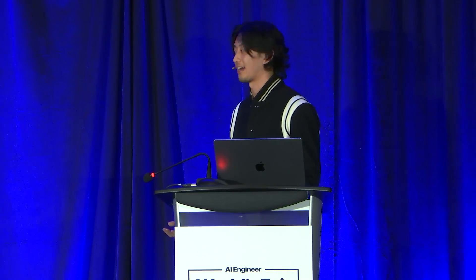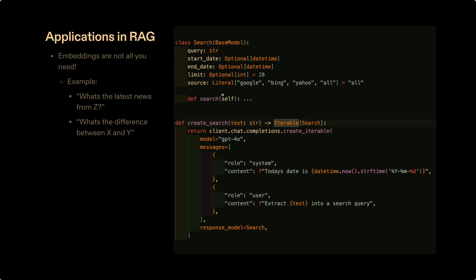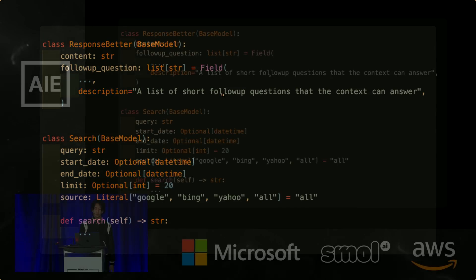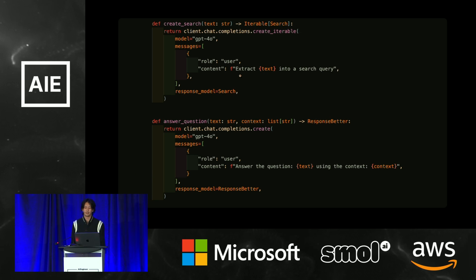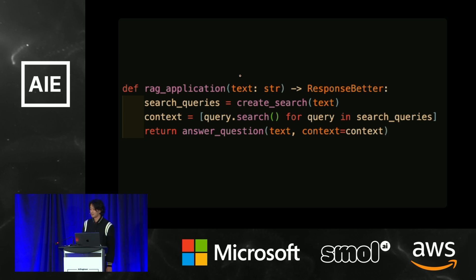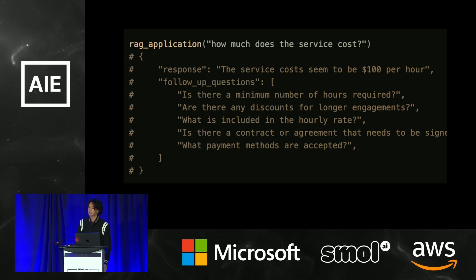If you ask 'what is the difference between X and Y,' you can just turn on iterable mode. Now you'll get a search query for Y and a search query for X, and your RAG application can do two parallel search queries, collect them together, and continue on. You can build a fairly sophisticated RAG application in two functions and two models: a model for how you respond with data and one for how you process a search query. You make a search query, return multiple searches, search each one, and pass the context into the answer question function. The LLM is hidden behind the type system we can now guarantee to be correct.